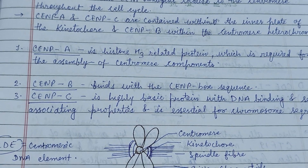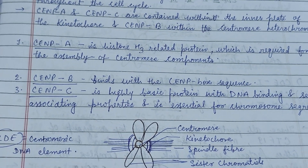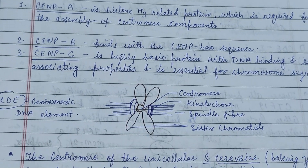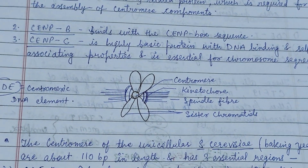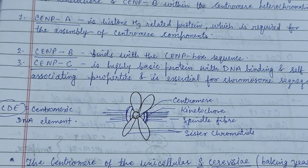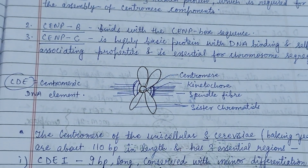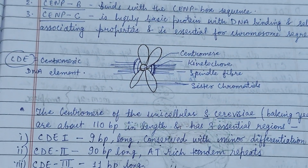The centromeric proteins include three main CENP antigens localized to the centromere throughout the cell cycle: CENP-A, CENP-B, and CENP-C — centromeric eukaryotic nuclear proteins.